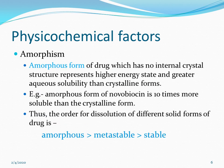The amorphous form of a drug has no internal crystal structure, represents a higher energy state, and has greater aqueous solubility than the crystalline form. This means the amorphous form shows better solubility and dissolution than the crystalline form due to its higher energy state. For example, the amorphous form of novobiocin is 10 times more soluble than the crystalline form. The order of dissolution is: amorphous form > metastable form > stable form.